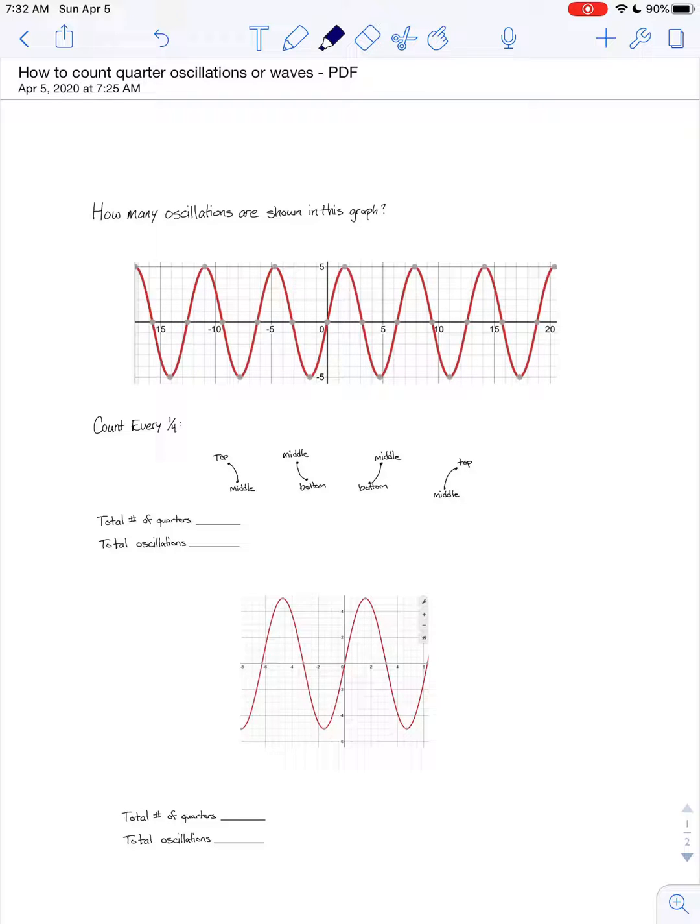So the way that works is we count every quarter of a wave either from top to middle, from middle to bottom, from bottom to middle, or middle to top.